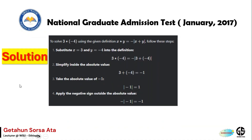We are given: find 3★(−4). Using the given definition, x★y equals minus the absolute value of x plus y. We substitute x = 3 and y = −4 into the definition.